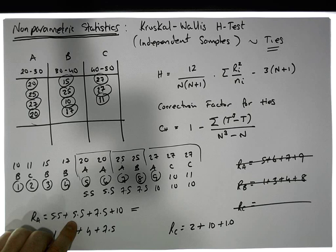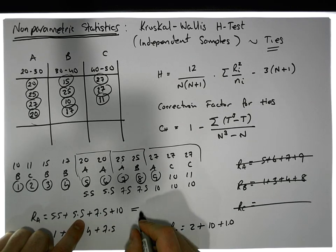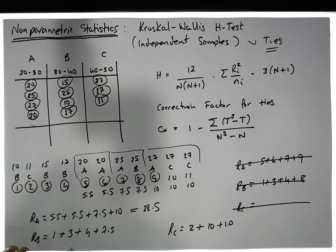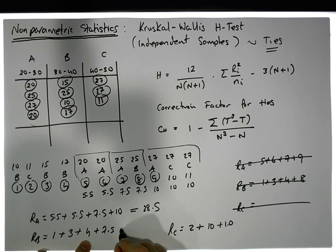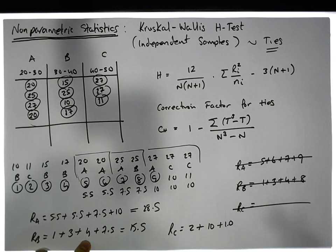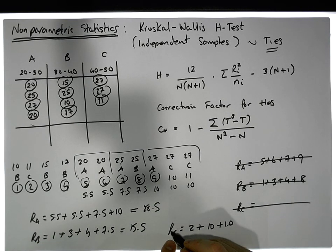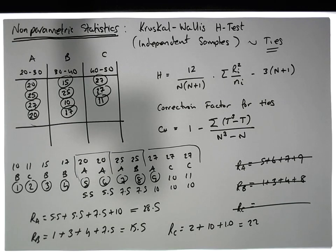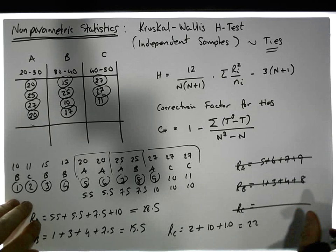So summing up: group A ranks total 5.5 plus 5.5 plus 7.5 plus 10 gives 28.5. Group B: 1 plus 3 plus 4 plus 7.5 gives 15.5. And the ranks of group C equal 22.